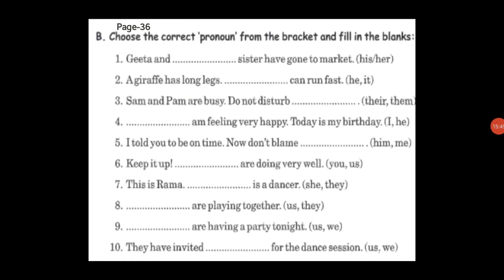Moving to page 36 — choose the correct pronoun from the bracket and fill in the blanks. 'Geeta and dash sister have gone to market' — Geeta is a girl, so 'her sister'. 'A giraffe has long legs — dash can run fast' — giraffe is an animal, so 'it can run fast'. 'Sam and Pam are busy — do not disturb dash' — Sam and Pam together, so 'do not disturb them'. 'Dash, I'm feeling very happy, today is my birthday' — use 'I'.